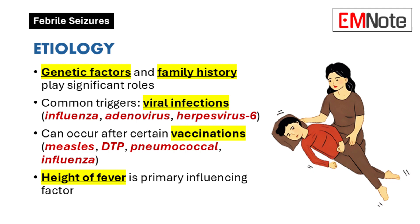The fever is a key ingredient, but there's more to it. The current thinking is that there's a genetic predisposition, so family history increases a child's risk. Viral infections are often the triggers for that fever — things like the flu or just the common cold. But it's not always viral.